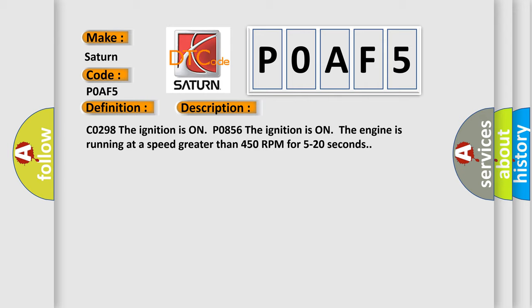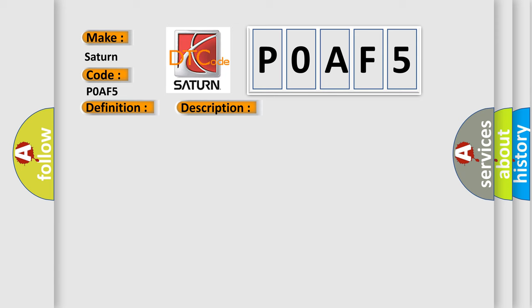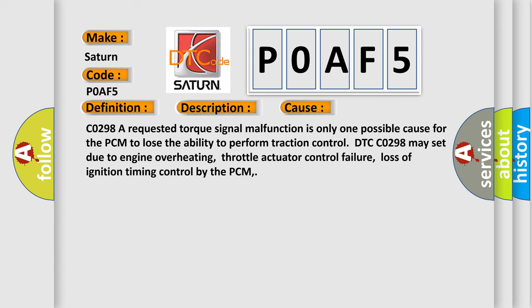This diagnostic error occurs most often in these cases. C0298: A requested torque signal malfunction is only one possible cause for the PCM to lose the ability to perform traction control. DTC C0298 may set due to engine overheating, throttle actuator control failure, or loss of ignition timing control by the PCM.